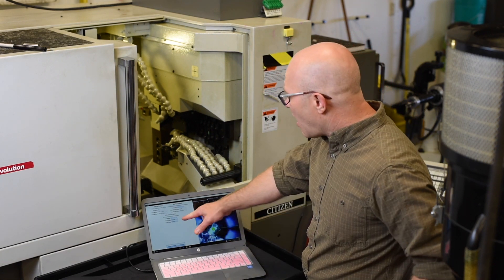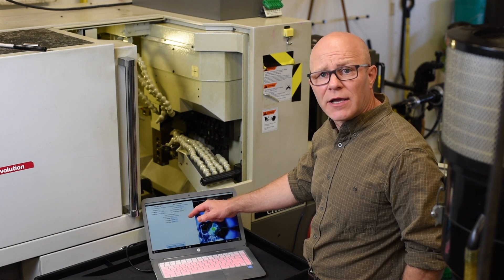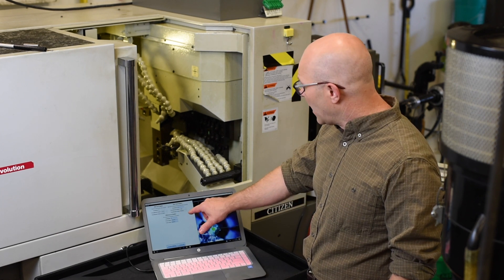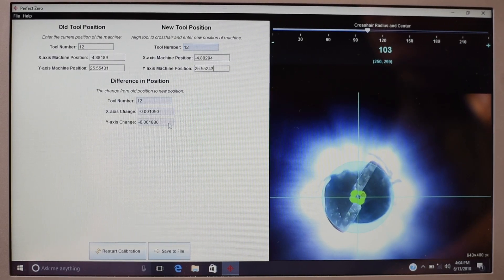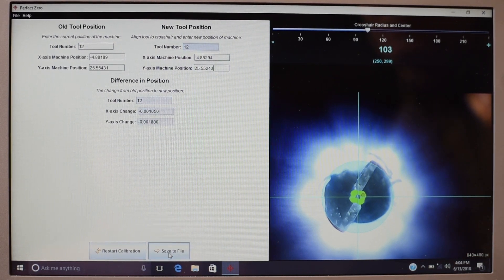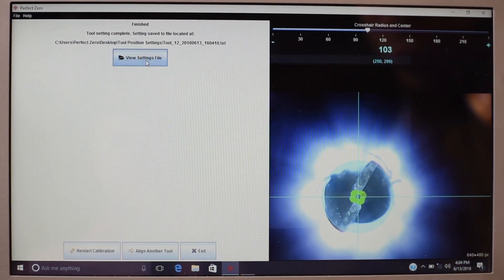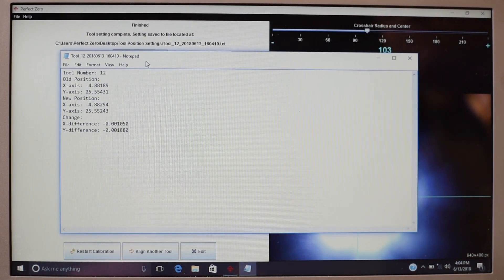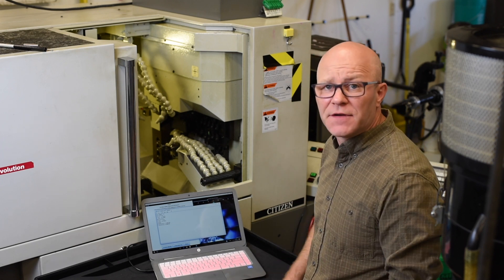From there, it's going to automatically calculate the difference in position from where we called the tool up to where now we have the tool when we visually align it with the crosshairs. Each tool can be saved from this point, and we can go and view this from our desktop or right from the software on where that tool was positioned at and what the difference is.